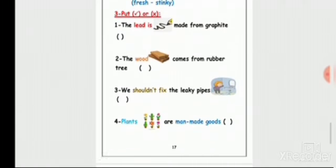Question number three, we will put right or wrong. Number one: the lead is made from graphite. The lead of the pencil - yes, graphite. Put right. The lead is made of graphite, the body is made of wood, and the eraser is made of rubber.